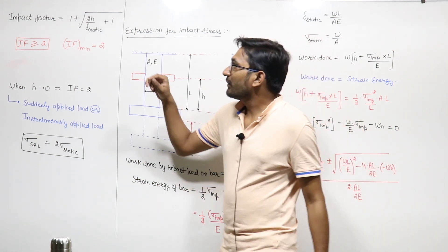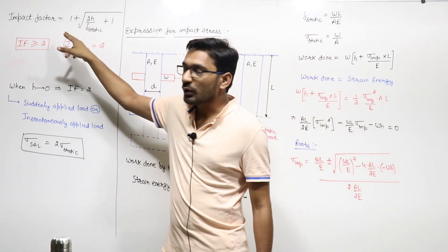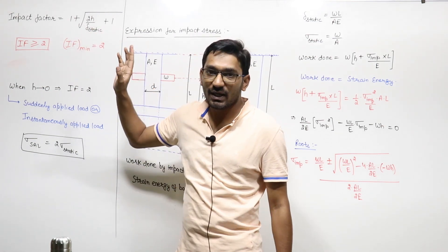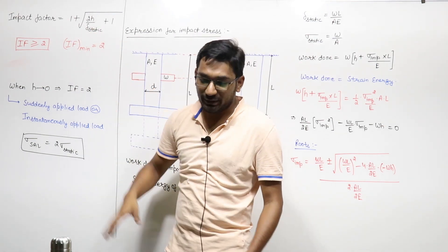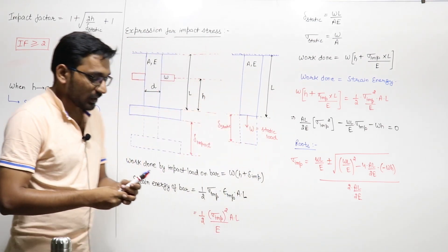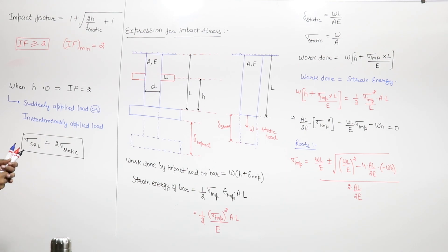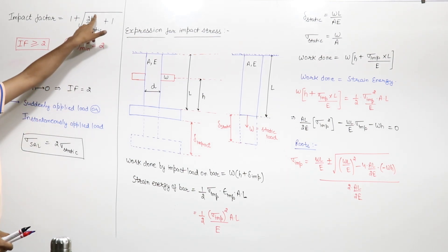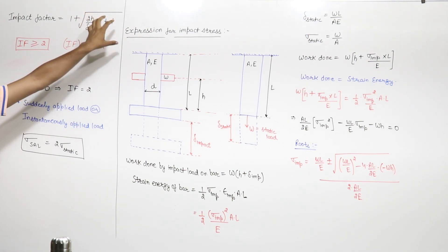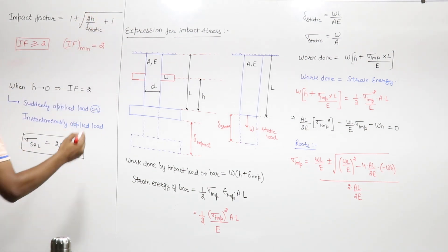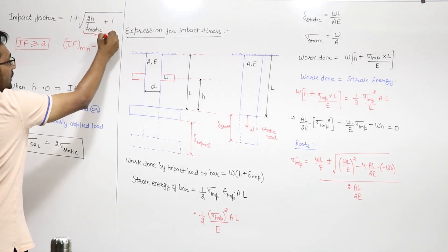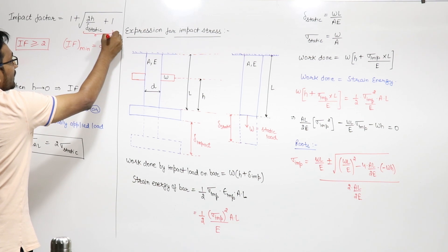The impact factor is equal to 1 plus the square root of (2h/delta_static + 1). This is the impact factor in the case of impact loading. If you see this relation, the term (2h/delta_static + 1) will always be greater than 1. This complete term under the square root will always be greater than 1.